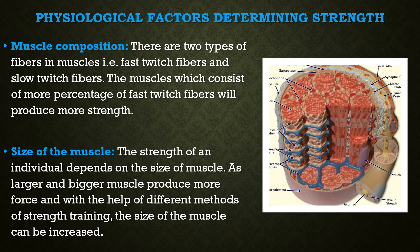Physiological factors determining strength. What are the physiological factors that determine strength? Number one is muscle composition. Each muscle consists of basically two types of muscle fibers: fast twitch fiber, that is white fiber, and slow twitch fiber, that is red fiber. The fast twitch fibers are capable of contracting faster and therefore can produce more force. On the contrary, the slow twitch fibers are not capable of contracting faster, although they are capable of contracting for a longer duration. So the percentage of this fiber determines the strength of a muscle.